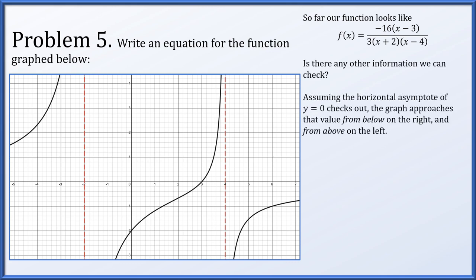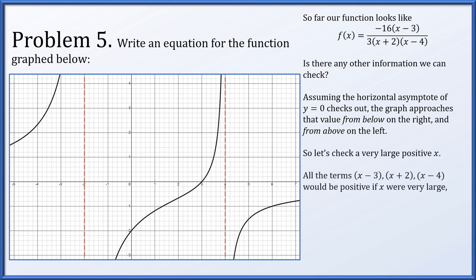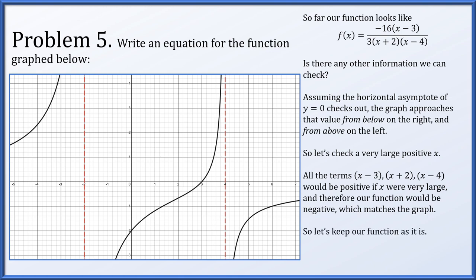We can verify end behavior: for very large positive x, all factors (x-3), (x+2), and (x-4) are positive, so the function is negative due to the -16 in the numerator. This means for large positive x the function approaches zero from below, which appears consistent with the graph. So our function f(x) = -16(x-3)/[3(x+2)(x-4)] appears to produce a graph very much like the one given.